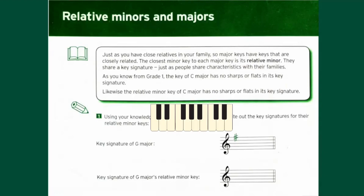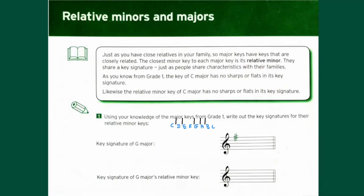To find the relative minor of a major key, you need a keyboard — you can use the one at the back of your workbook or simply draw one. Let's take C major as an example. To find its relative minor, we count three semitones below, without counting C itself: B, B flat, and A. So A minor is the relative minor of C major, and both share the same key signature with no sharps or flats.